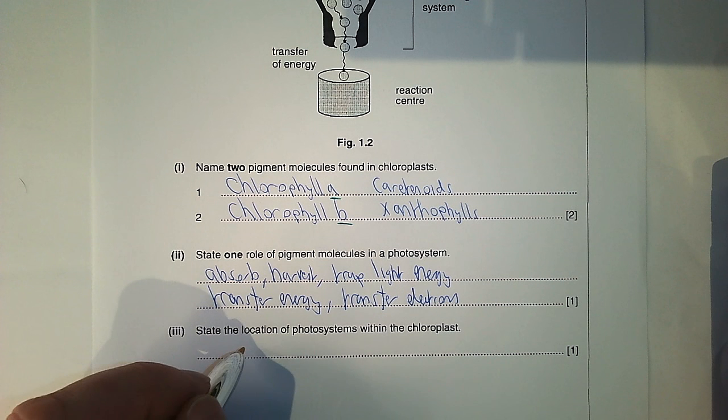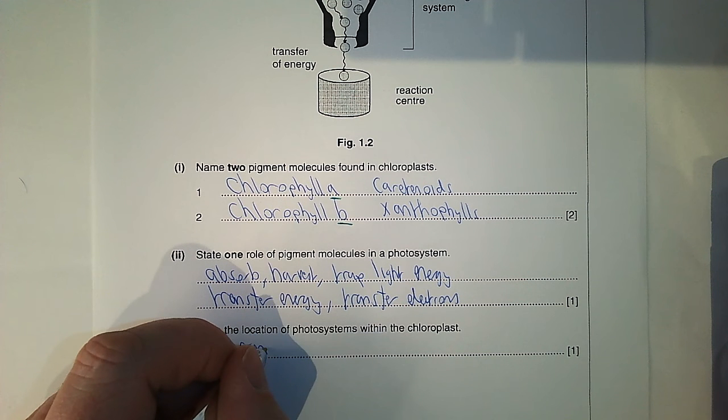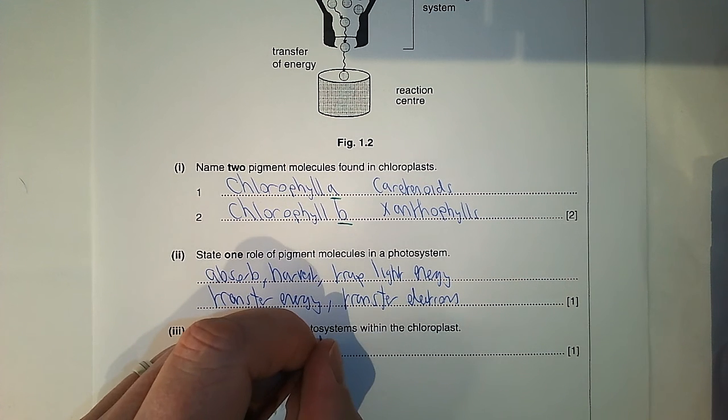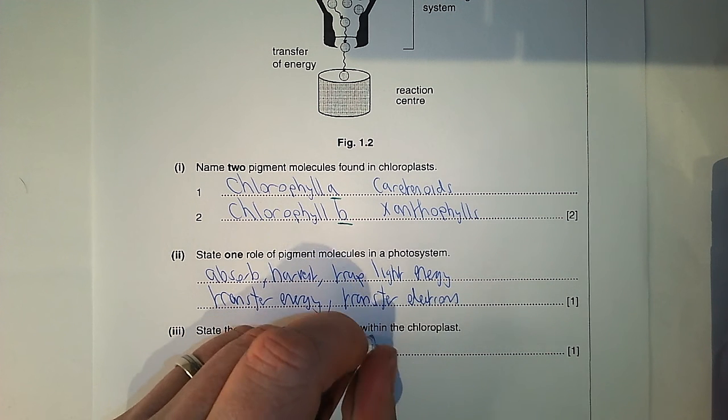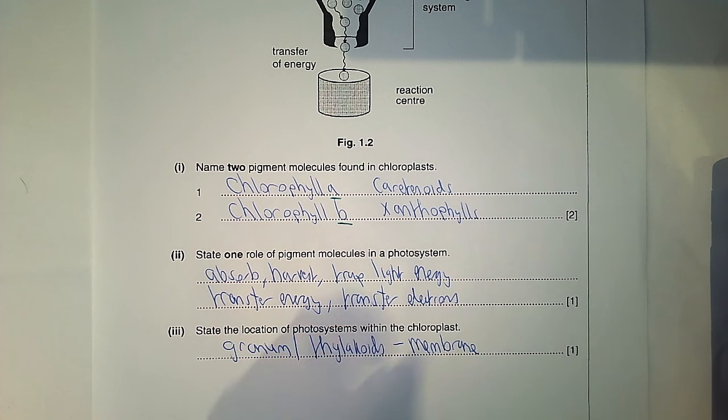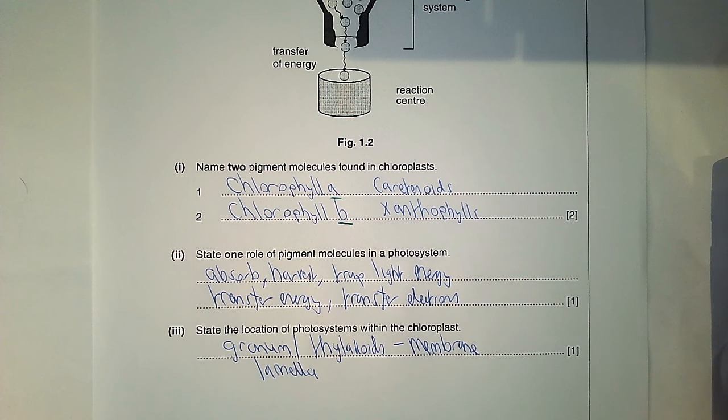The photosystems in the chloroplast are found in the granum membrane or the thylakoids, and it's the membrane of these structures. So the granum membrane or the thylakoid membrane. You can say in the lamella.